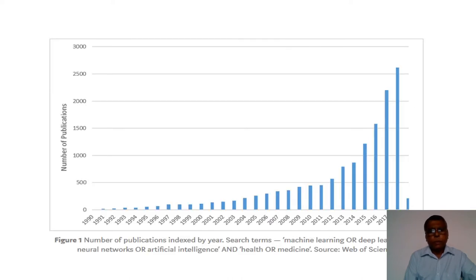There is a large number of recent publications in science — for example in the medical field — using machine learning and deep learning, showing how popular this area has become in research. Many deep learning-based applications are also available now, and machine learning and deep learning methods are widely used in many fields beyond medicine.